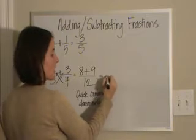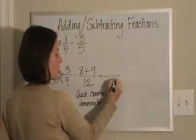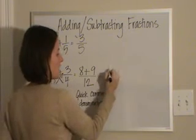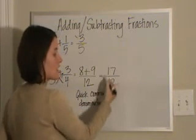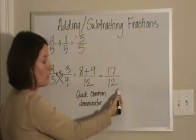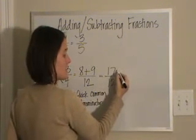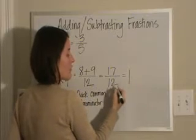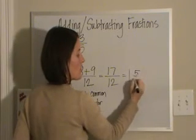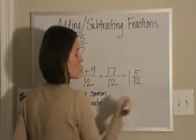Now it's just a matter of cleaning it up. I keep my denominator of 12. 8 plus 9 is 17. And here I ended up with a fraction more than 1 whole. I'm going to treat this like a division problem. 17 divided by 12 is 1. I have a remainder of 5, so I put 5 over 12.